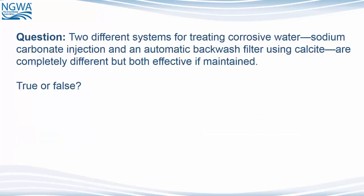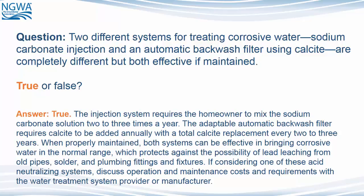Question: Two different systems for treating corrosive water — sodium carbonate injection and an automatic backwash filter using calcite — are completely different, but both effective if maintained. True or false? The answer is true. The injection system requires the homeowner to mix the sodium carbonate solution two to three times a year. The adaptable automatic backwash filter requires calcite to be added annually with a total calcite replacement every two to three years. When properly maintained, both systems can be effective in bringing corrosive water into the normal range, which protects against the possibility of lead leaching from old pipes, solder, and plumbing fittings and fixtures. If considering one of these acid neutralizing systems, discuss operation and maintenance costs and requirements with the water treatment system provider or manufacturer.